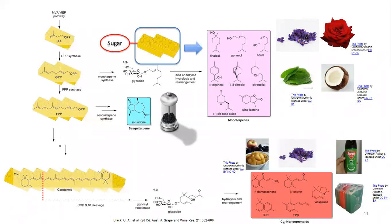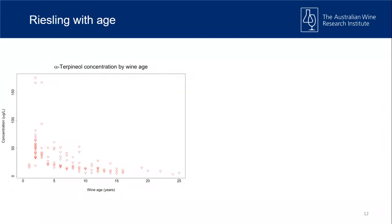A bit of background on carotenoids: they're in grapes essentially as a sunscreen, protecting chlorophyll from being broken down by too much energy — they're photoprotectants. The more light energy coming into the grape, the more the grape needs carotenoids to protect chlorophyll. That's why we get them there.